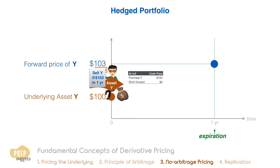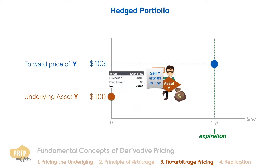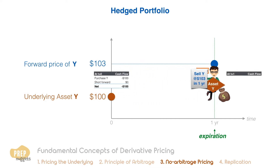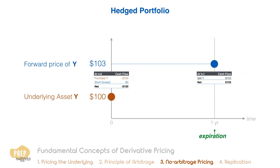Since there is no cash flow involved at the initiation of the forward, the net cash outflow from the investor at time zero is $100. At expiration, the investor is obligated to sell the asset at $103 to close the short position. The investor simply delivers the asset which he owns and collects $103 regardless of the market price of the asset at expiration. The investor earns $3 in a year — a 3% return — without taking any risk of the underlying asset other than counterparty risk. The investor will get a 3% return regardless of the price of the underlying at expiration.